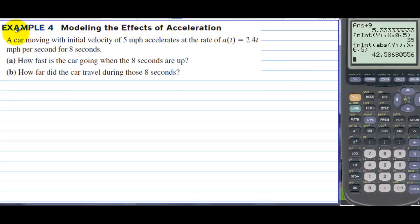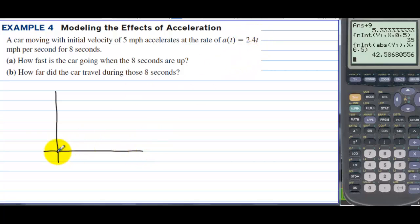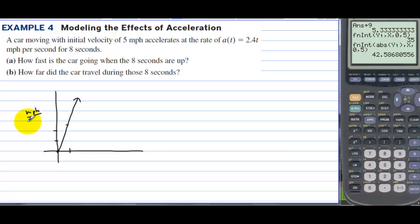Modeling the effects of acceleration. A car moving with initial velocity of 5 miles per hour accelerates at the rate given by the acceleration function in miles per hour per second, for 8 seconds. How fast is the car going when the 8 seconds are up? Let's look at the acceleration function and graph it — it has a y-intercept of 0, going up 2.4 over 1. The x-axis is in seconds.